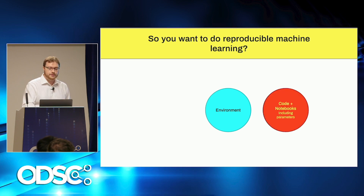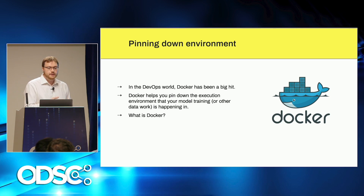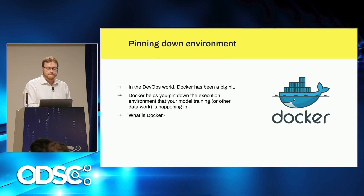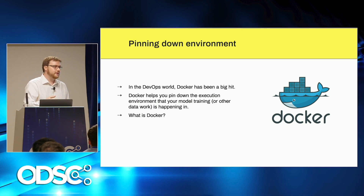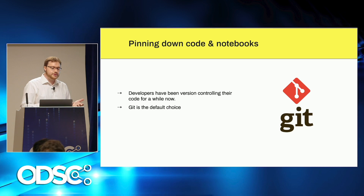When you're pinning down the environment in which you're training or serving a model, I highly recommend using Docker. It is a fairly low-level tool but actually quite usable — the CLI is very good. It allows you to create and run frozen copies of the Linux operating system with your code in it, so if you run it twice — modulo randomness — it will behave the same way, even if the server you're running it on is 12 months older or newer. For versioning code, you should use Git — it's pretty much become the de facto way of versioning code.